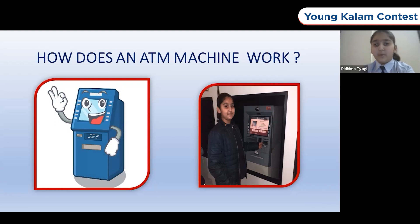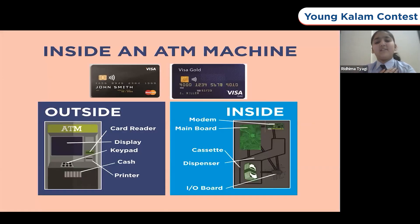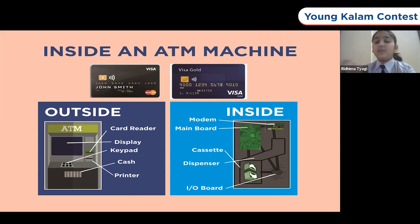I recently went along with my father to withdraw money, and I thought he would be taking me to a bank. But he made me stand in front of a machine which had numbers just like a telephone. I got confused. Then my dad explained what on earth we were doing in front of this machine. You know what the funny part is — I thought the letters ATM stand for 'any time machine.' But it actually means automated teller machine. Ever since my dad took me to the ATM kiosk, I have been thinking: how does a machine know how much money is in my account? He explained that there is a wireless communication between the bank and the ATM without any human interaction.